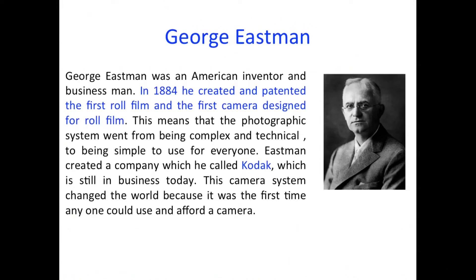George Eastman was an American inventor and businessman. In 1884 he created and patented the first roll film and the first camera designed for roll film. This means that the photographic system went from being complex and technical to being simple to use for everyone.